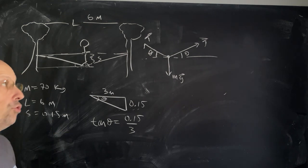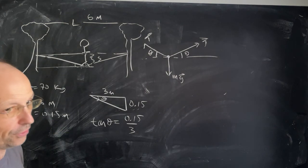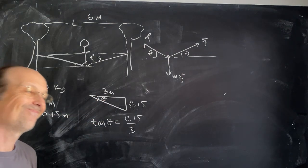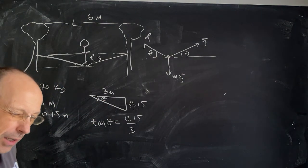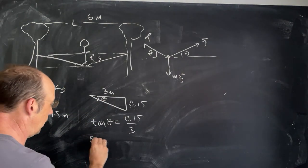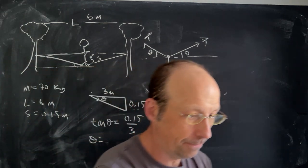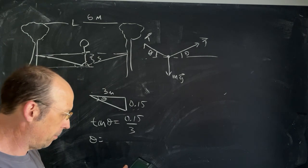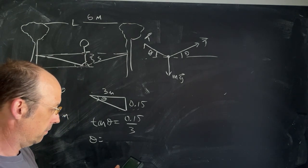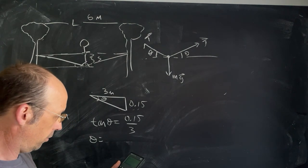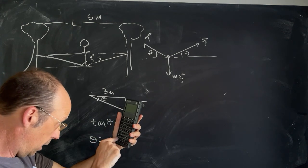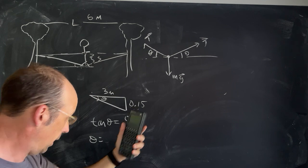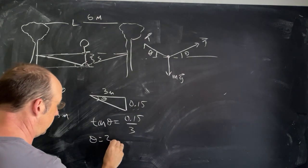I can find angle theta from that. There's also a way to do it without finding the angle — I'll show both methods. Using the calculator: 0.15 divided by 3, then inverse tangent, I get theta equals 2.87 degrees.